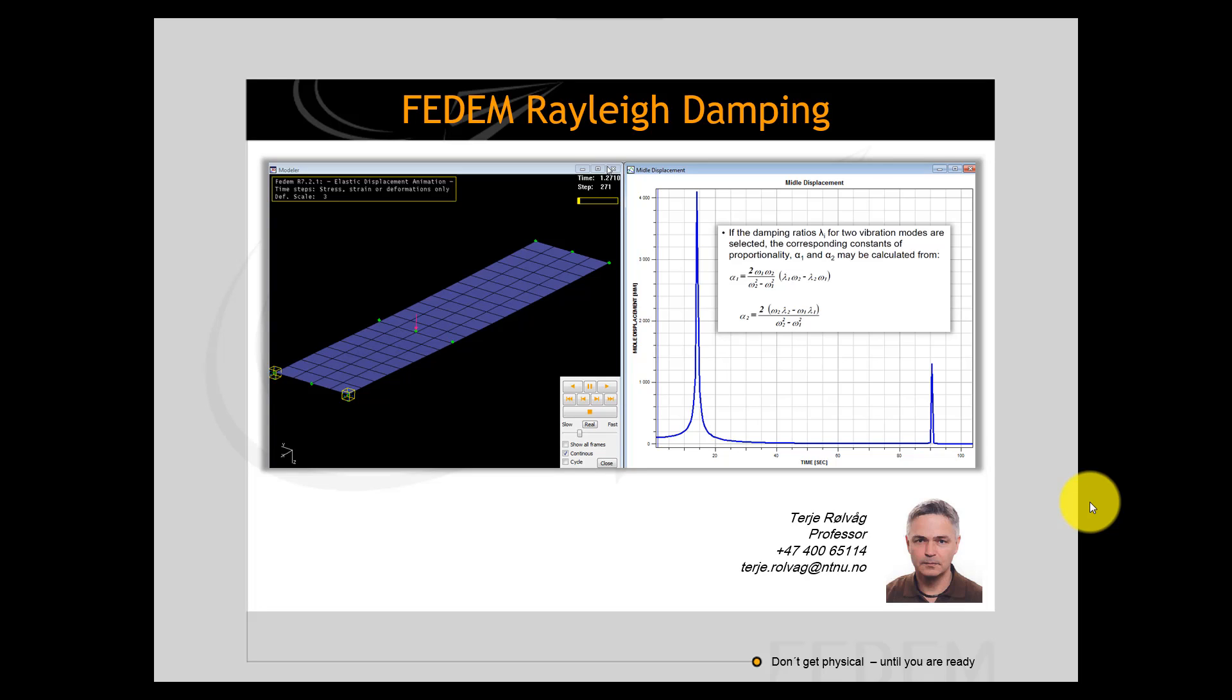Good morning everyone, I'm TJ and today I will talk about structural damping in finite element models. FEDEM is using Rayleigh damping which is mass and stiffness proportional, and that means you can use alpha 1 which is the mass proportional damping ratio and alpha 2 which is the stiffness proportional damping ratio to precisely define the damping of two resonance frequencies which are measured. However, you will see that to use mass proportional damping is not straightforward.